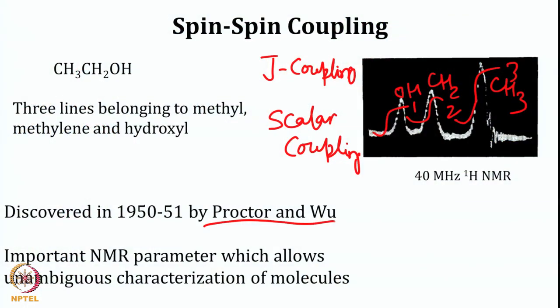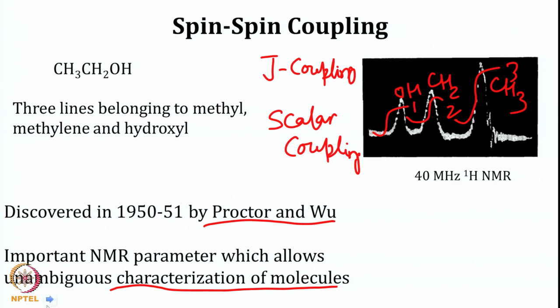In the same year, around 1950-51, Procter and Wu discovered one of the very important parameters called the coupling constant. This helps in unambiguous characterization of a molecule, and today we will look at how it helps in that characterization.